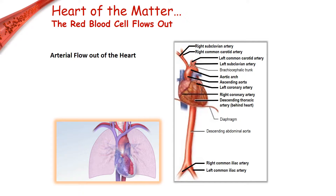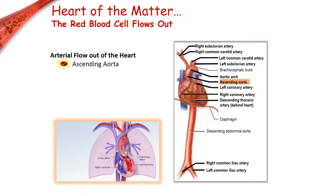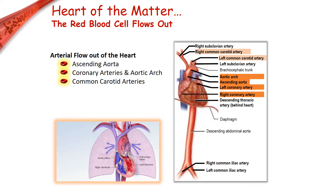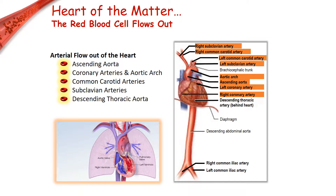The heart is the driving force of a red blood cell's path through the circulatory system and where our blood cell's journey begins. There are six major structures that usher blood out of the heart: the ascending aorta, the coronary arteries and aortic arch, the common carotid arteries, the subclavian arteries, the descending thoracic aorta, and the common iliac arteries.